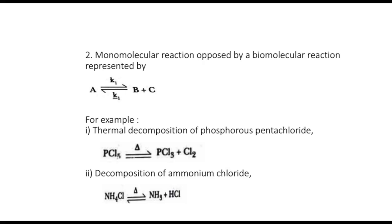The second subtype is where a monomolecular reaction is opposed by a bimolecular reaction. The general form is A interconvertible to B and C, where A gets converted to B and C with rate constant K1. An example is the decomposition of PCl5, which gives PCl3 and Cl2. So one molecule of PCl5 gives two molecules — one each of PCl3 and Cl2 — making it a bimolecular reaction.